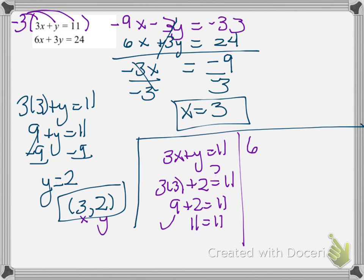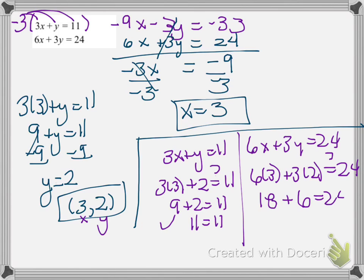Let's plug it into the other one: 6x plus 3y equals 24. So 6 times 3 plus 3 times 2, does that equal 24? 6 times 3 is 18, plus 3 times 2 is 6, equals 24. Yes, 24 equals 24, so this is true. This is in fact our solution.